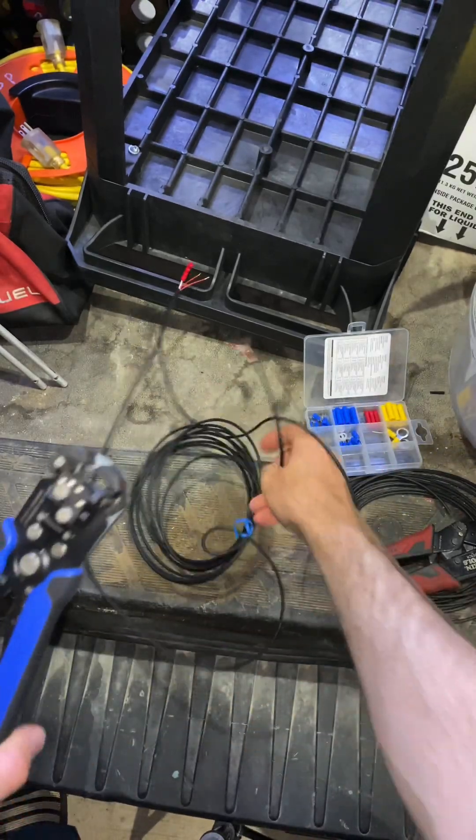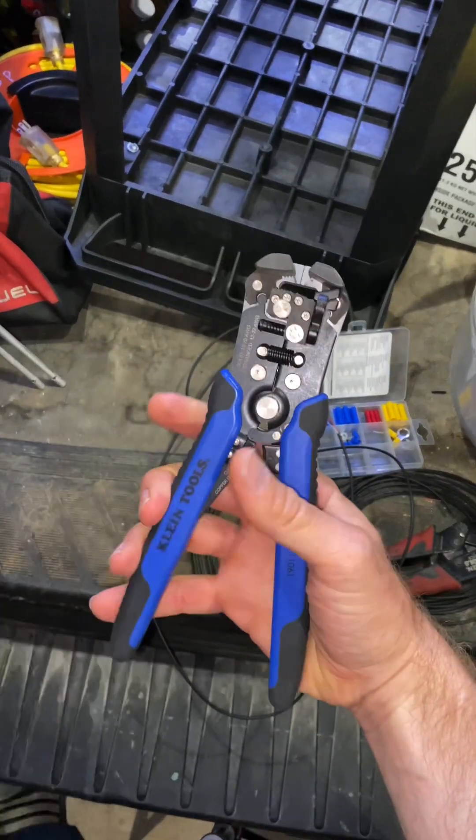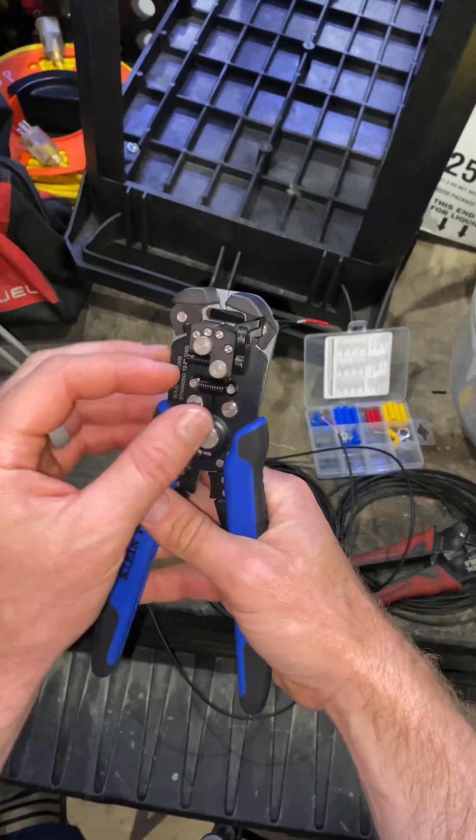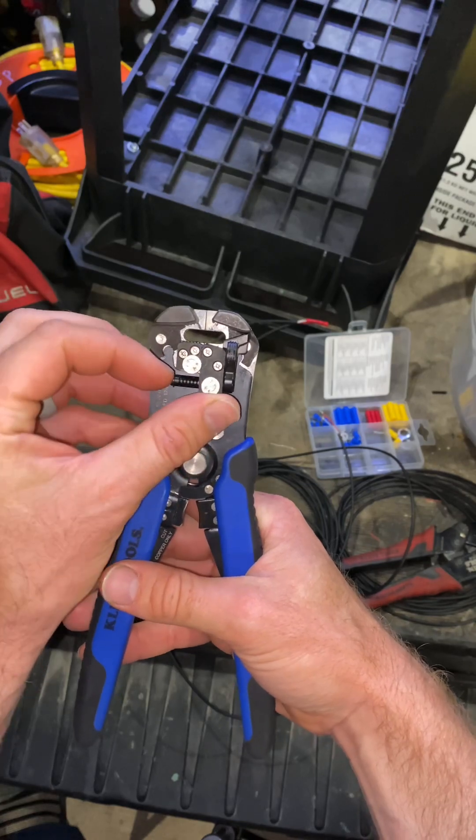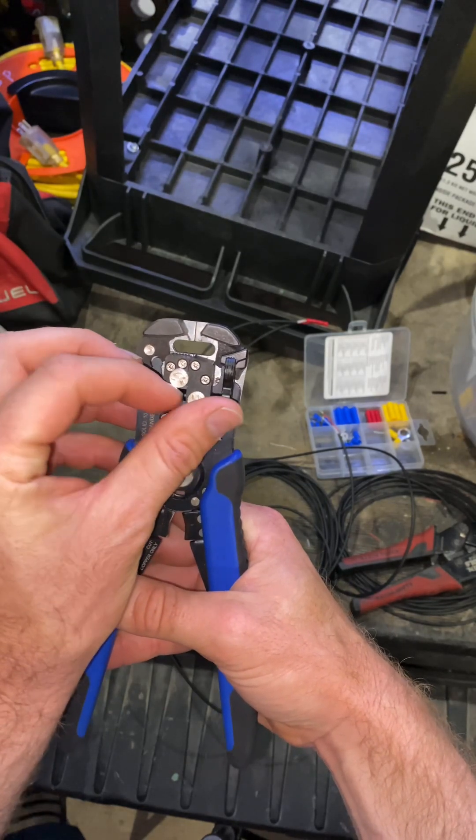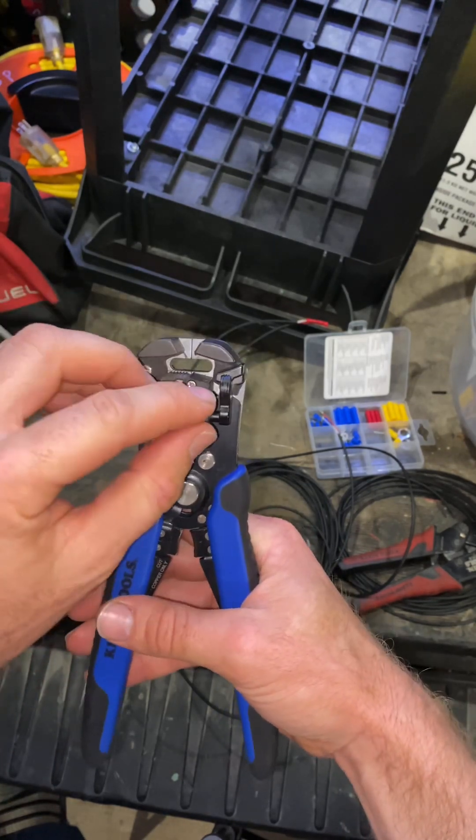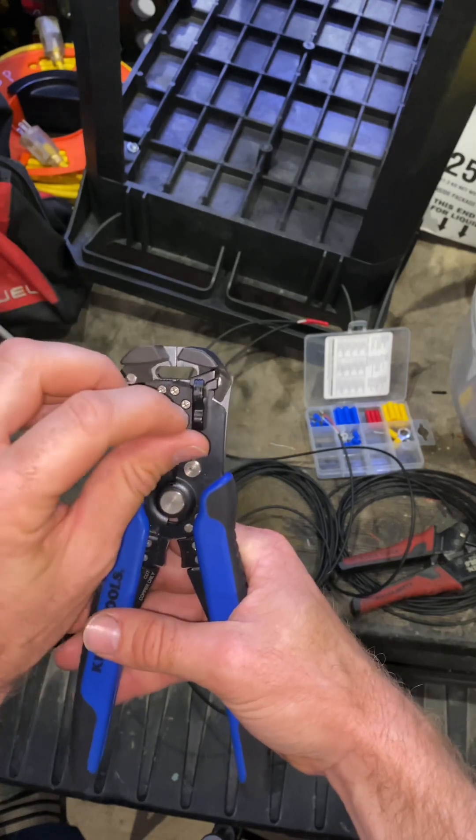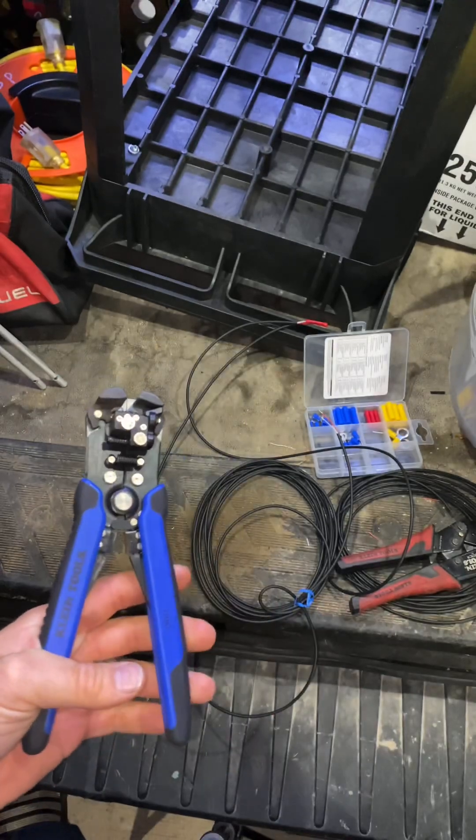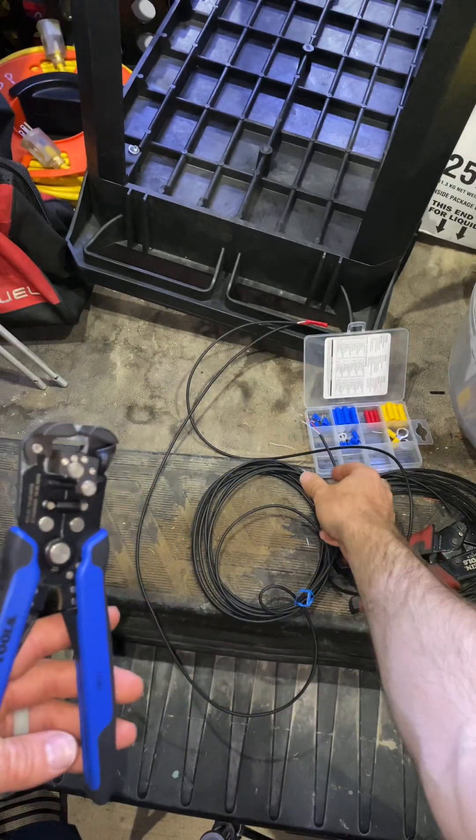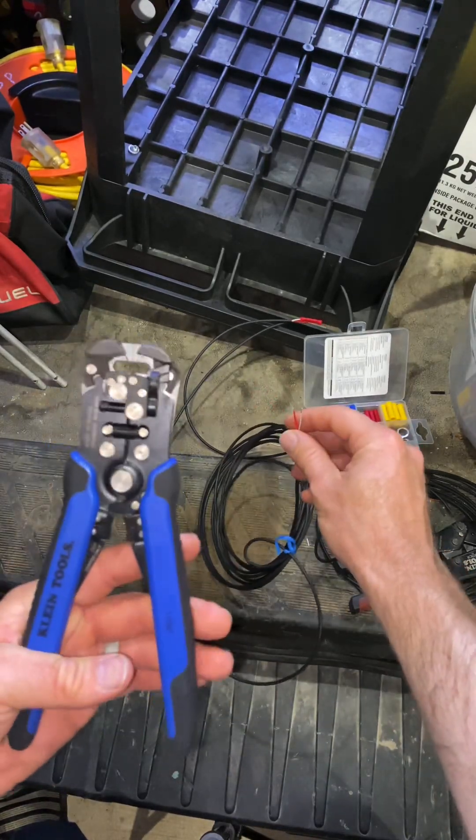One key thing that you really need, I think, for stripping this kind of fine wire is a really good pair of wire strippers like these Klein automatic wire strippers. You adjust the tab here. This is probably the most important tool that you're going to need to have to make a good strong connection with this kind of fine wire.